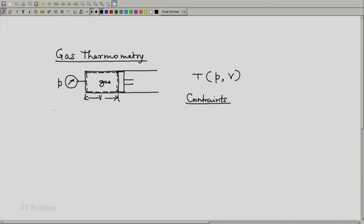For example, option one: we fix the piston at one place, in which case the volume cannot change. And for this fixed volume, now we can say temperature can be defined as a function of pressure. This scheme is known as a constant volume gas thermometer.